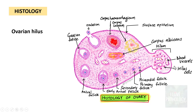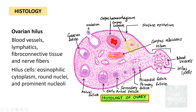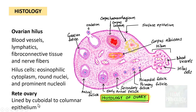The ovarian hilum contains blood vessels, lymphatics, fibro-connective tissue, and nerve fibers. Along with these structures, you also have hilus cells, which have eosinophilic cytoplasm, very round nuclei, and prominent nucleoli. Within the ovarian hilus you also have the rete ovary, which is lined by cuboidal to columnar epithelium.